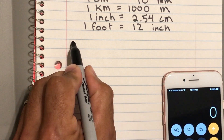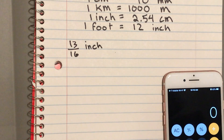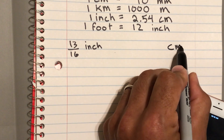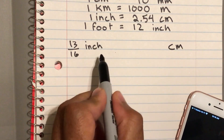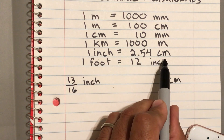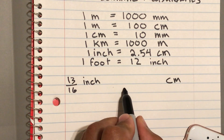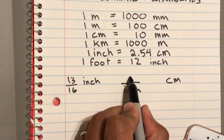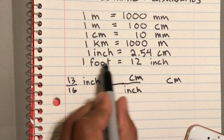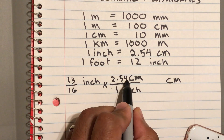So you write down thirteen sixteenths of an inch, and we want to convert that to centimeters. We know that one inch equals 2.54 centimeters. We want to make sure inches go on the bottom to divide out, so we put inches on the bottom and centimeters on the top. Make sure you put the numbers with the correct units — one inch equals 2.54.